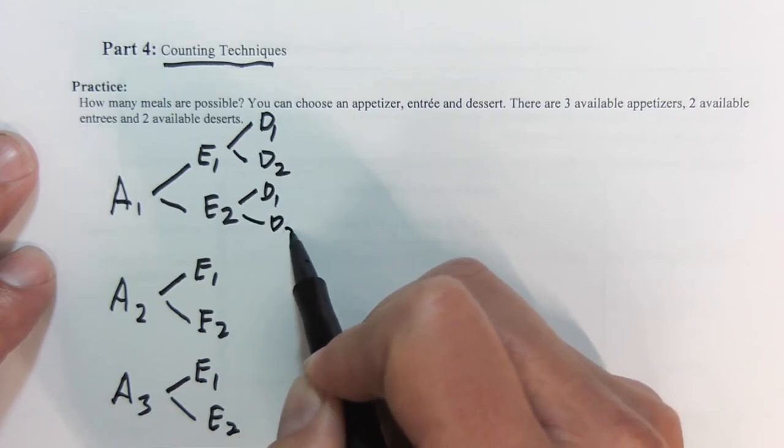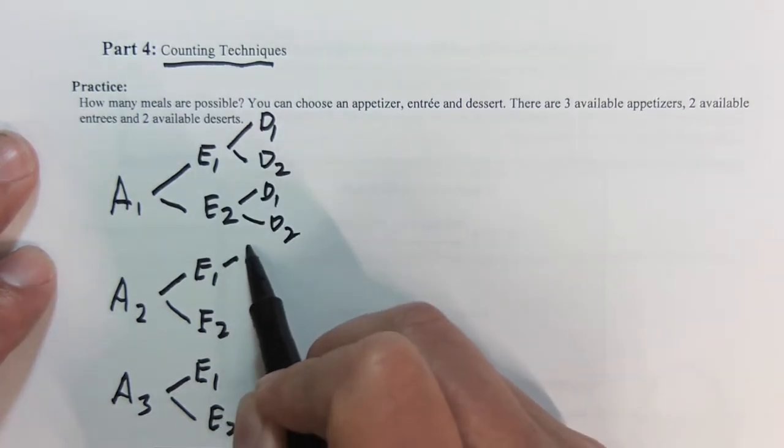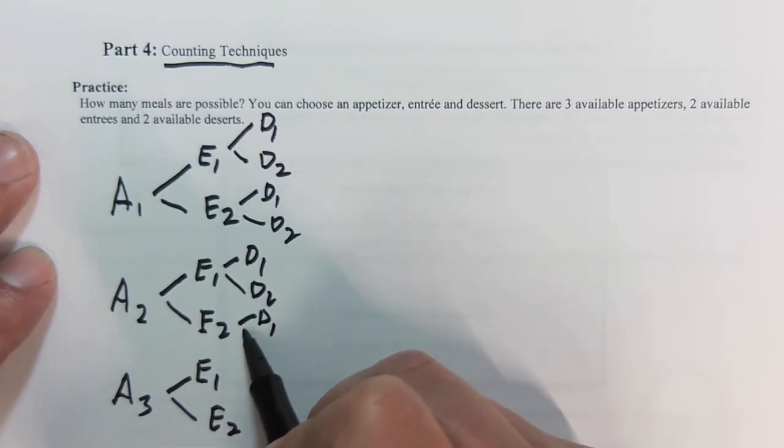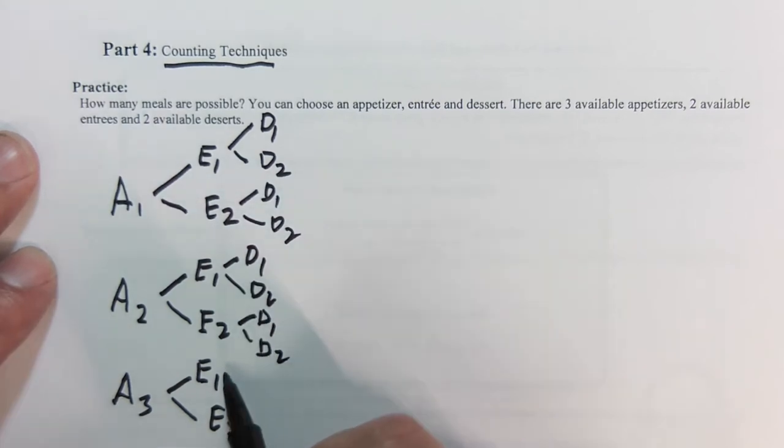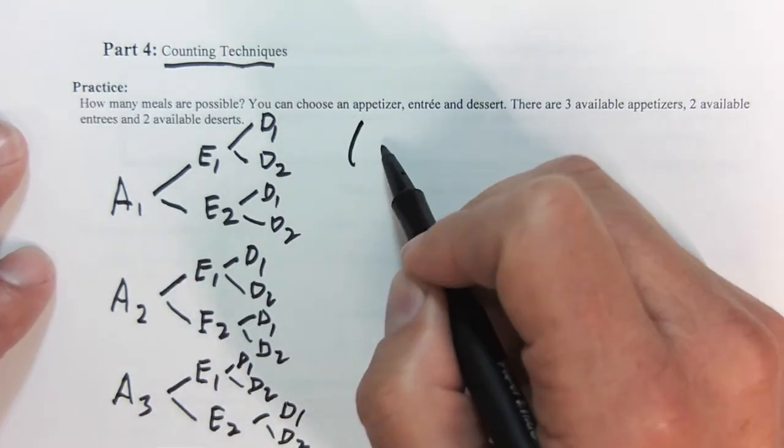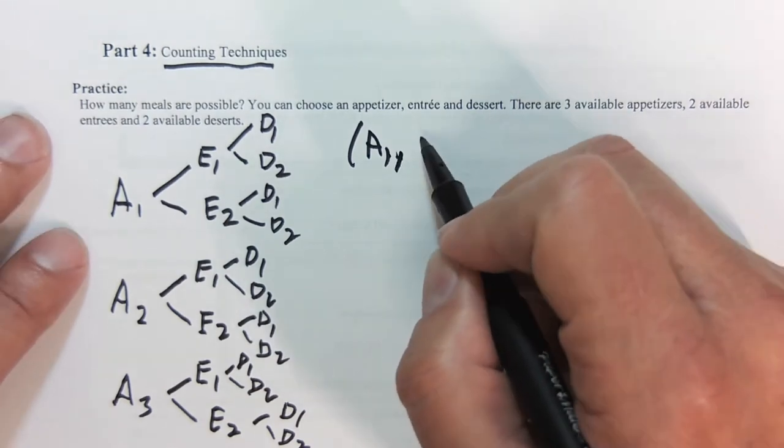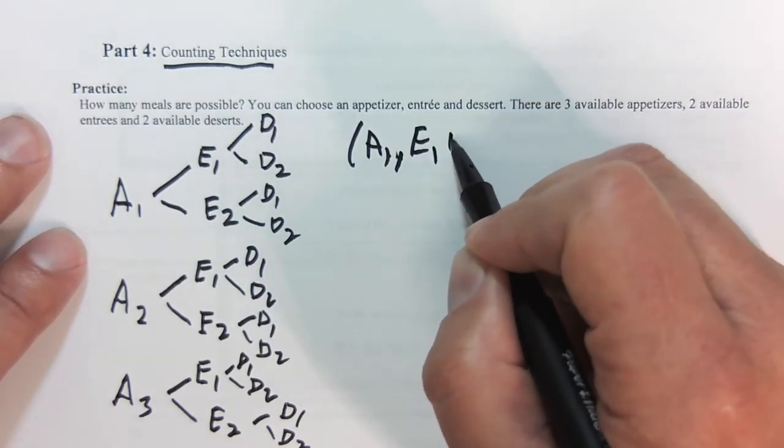Next up, each of those gets to choose one of two desserts. It's going to get crowded here in a second. You don't always have to write this out, but it can be useful to have an idea of what we have. Let me write them out. So we have appetizer one, entree one, dessert one.